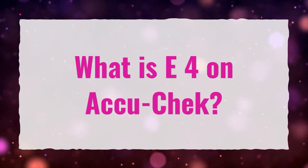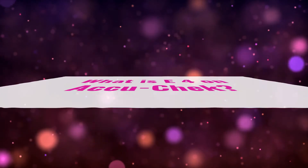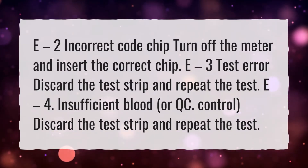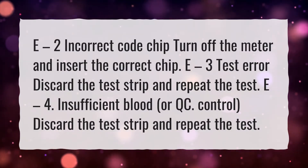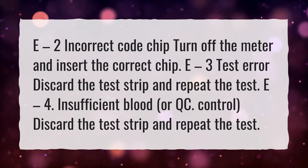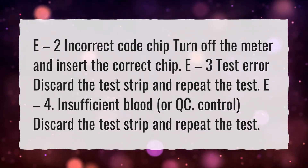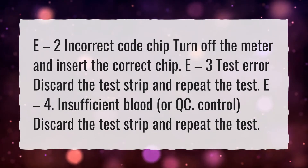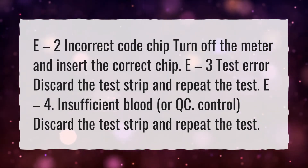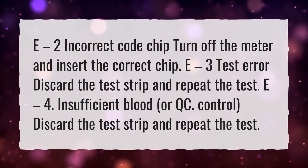What is E4 on AccuCheck? E2: incorrect code chip — turn off the meter and insert the correct chip. E3: test error — discard the test strip and repeat the test. E4: insufficient blood or QC control — discard the test strip and repeat the test.